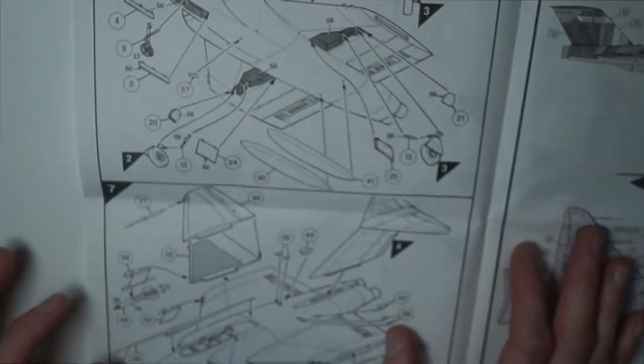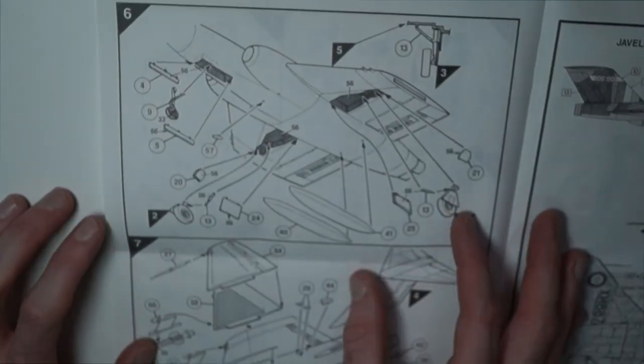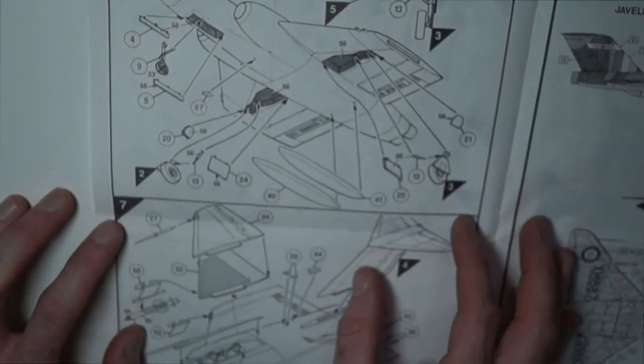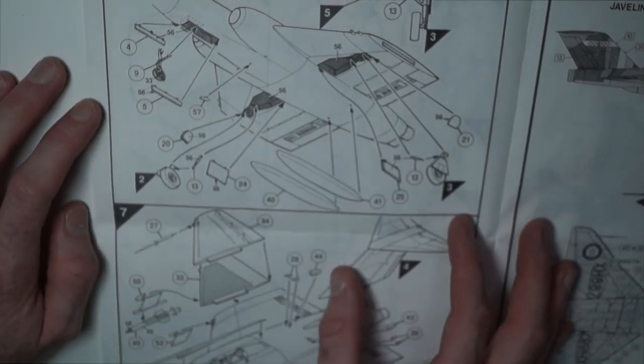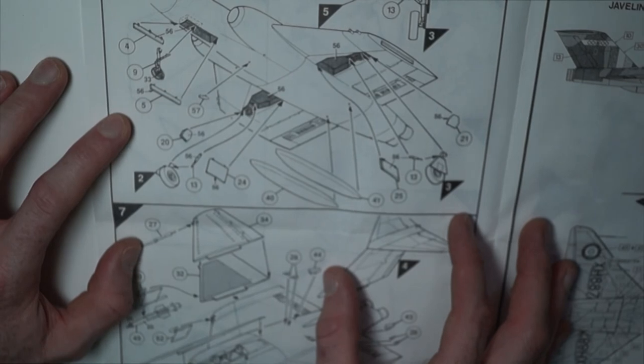Over the page there's only seven build steps to this so it's fairly quick. Step six is adding the oleos.